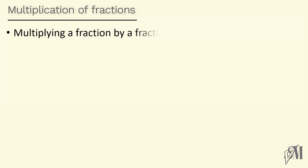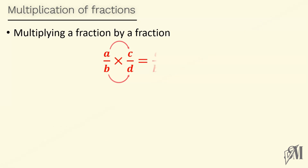Now let's look at how to multiply a fraction by another fraction. If a over b is multiplied by c over d, always remember: the numerators are multiplied separately and the denominators are multiplied separately. So a into c gives ac and b into d gives bd, and the answer becomes ac over bd.